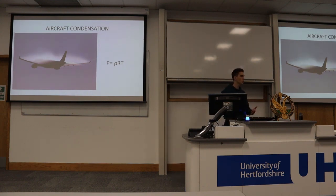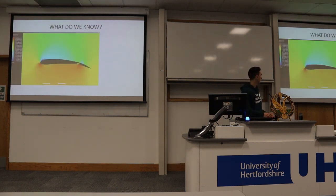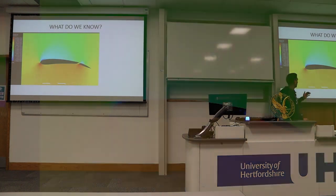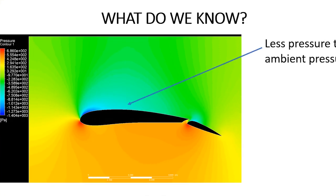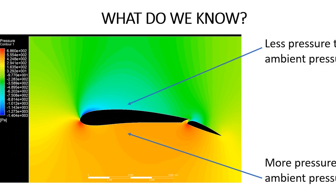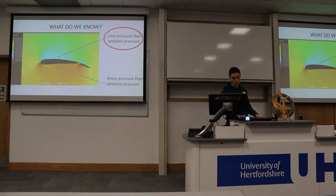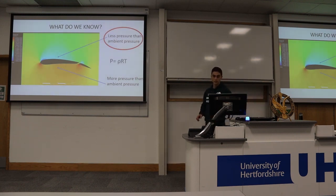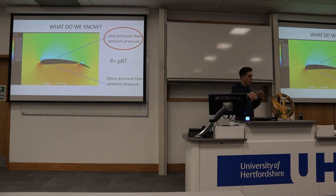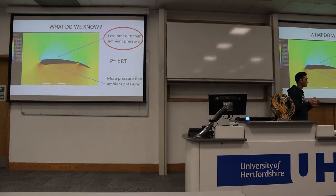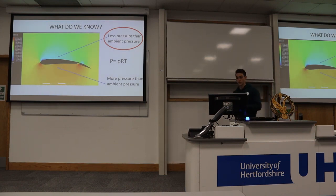We can see here that pressure and temperature are directly related. So if we change pressure, temperature is going to change also. This is a computational fluid dynamics analysis of an airfoil. We can see how pressure is decreasing on the upper part of the wing and on the lower part pressure is increasing. For our purposes, we focus on the first part because if pressure is decreasing, temperature is also decreasing. So condensation appears because with specific humidity conditions in the atmosphere, if you decrease temperature, condensation will appear.